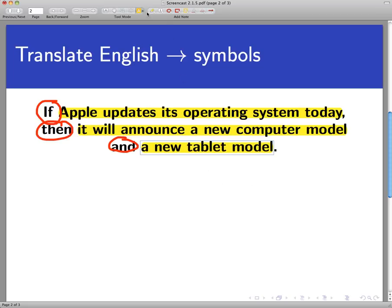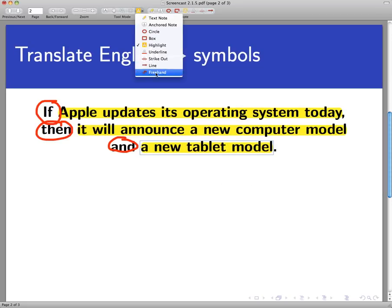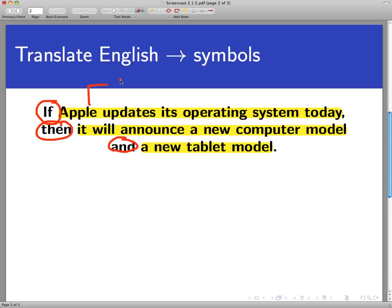The thing to notice and what's different here than the previous statements is that now there are really three independently functioning sentences. The first one, which we'll call P, is as simple as possible. There's no negations or conjunctions or disjunctions happening. P is the sentence, Apple updates its operating system today. But in the conclusion side, there are two. Apple will announce a new computer model. Let's call that Q. And then Apple will announce a new tablet model, let's call that R. So R is connected to Q by the and, but it's not related to Q in any logical or English sense. Q and R are different statements.